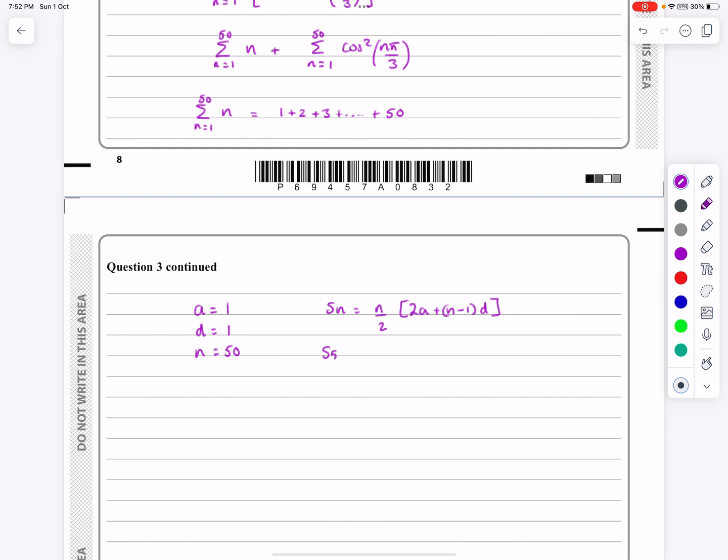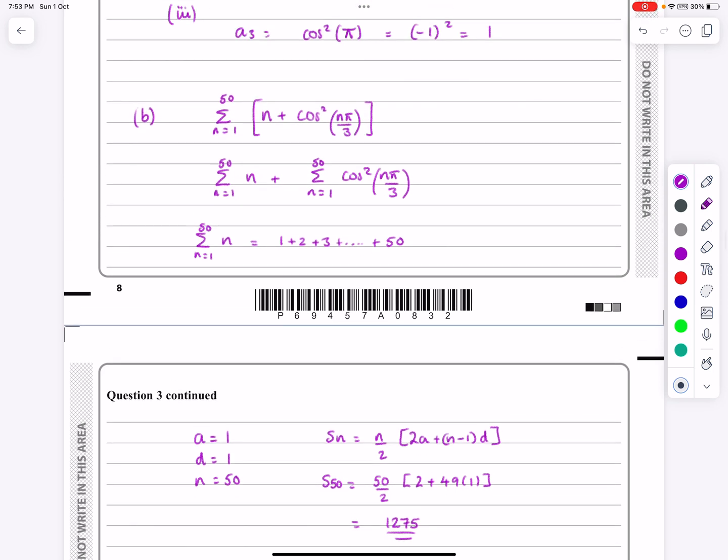So s 50 is going to be equal to 50 over 2, 2 lots of a, 2 lots of 1, just 2. 50 minus 1 is going to be 49 times 1 there, and then just work that out in the calculator. That works out to be 1275. So that's, going back to this one, that's going to be this bit here, or in other words, that's going to be the total of that bit.